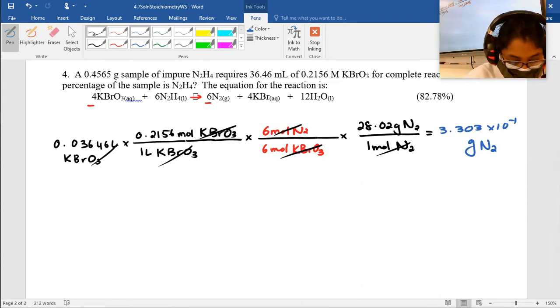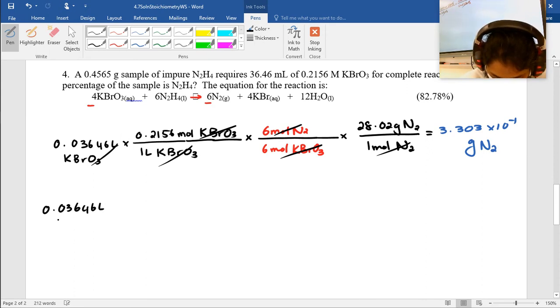Now I can use the same thing going from liters of KBrO3 to moles of hydrogen, because here I have water. So it's basically the same thing. 0.03646 liters. So I'm doing long form work just so you know where I'm coming from and where I'm going.